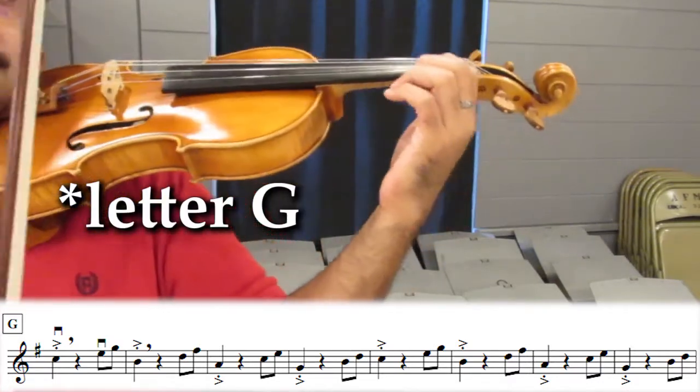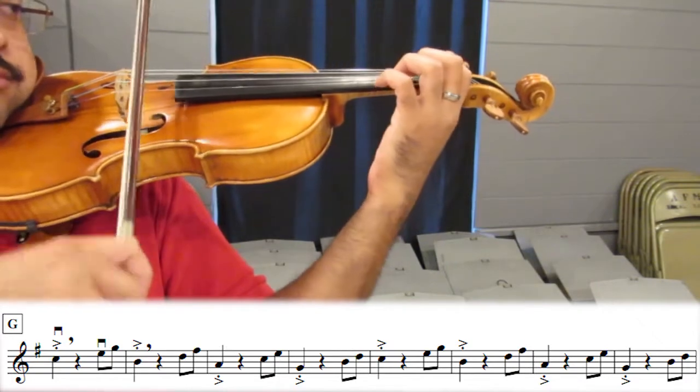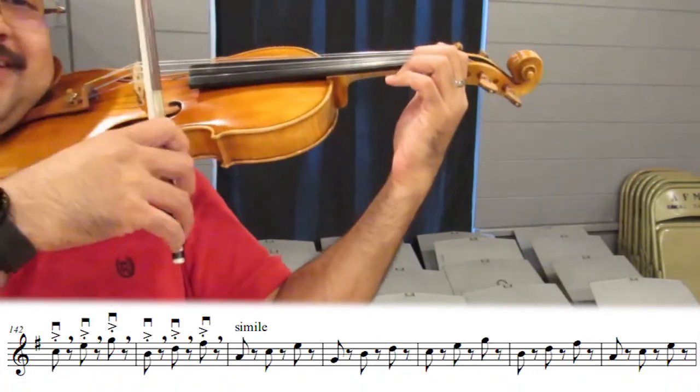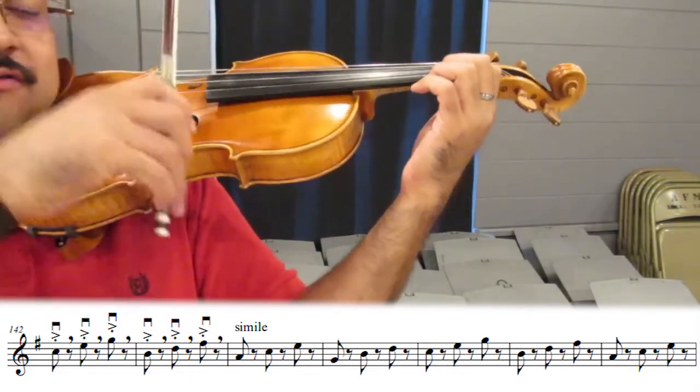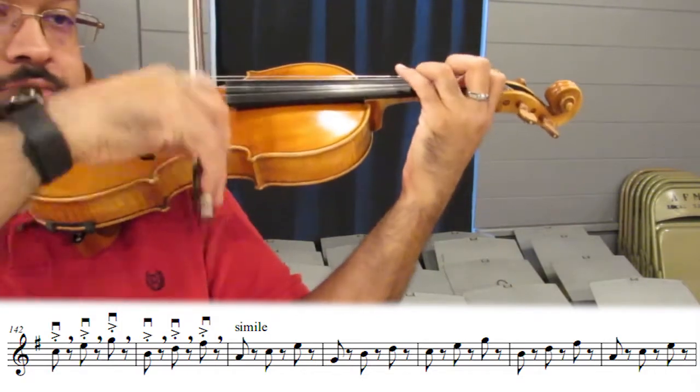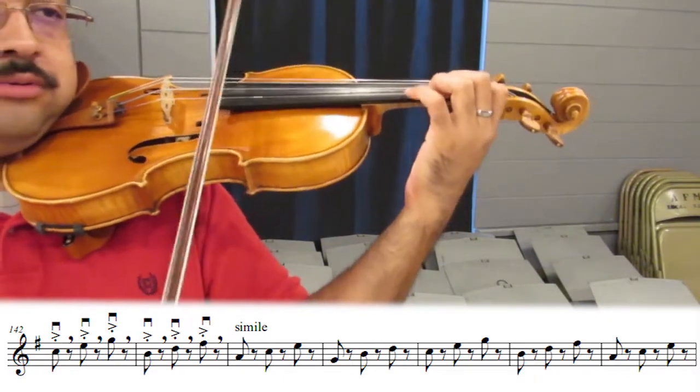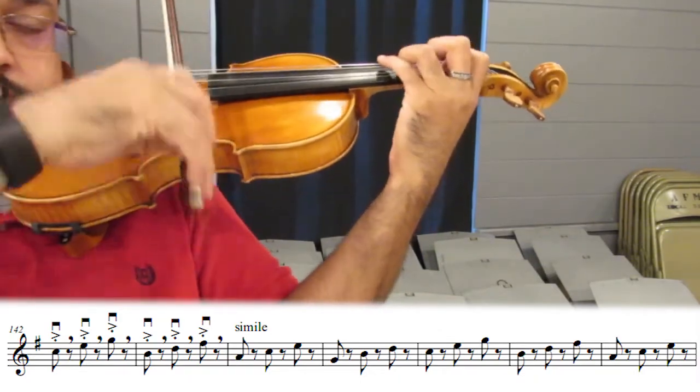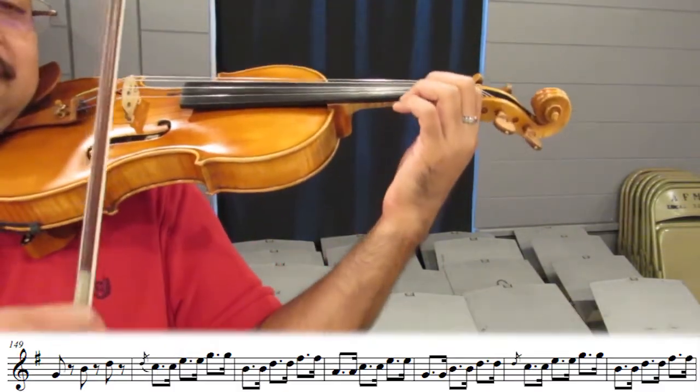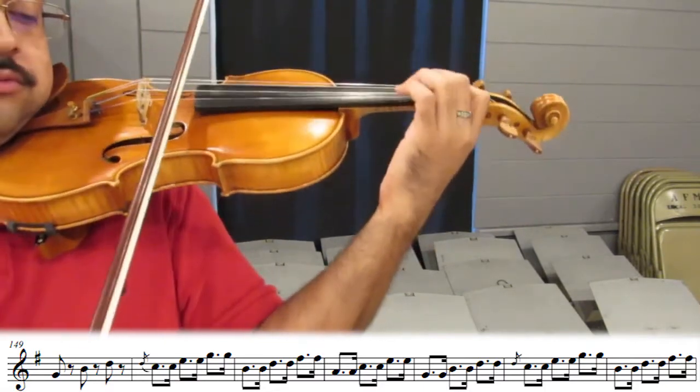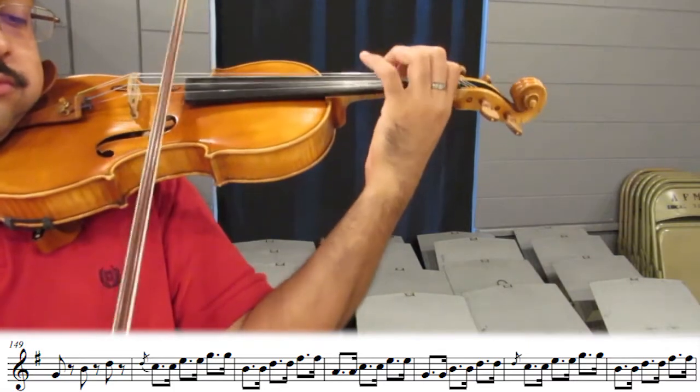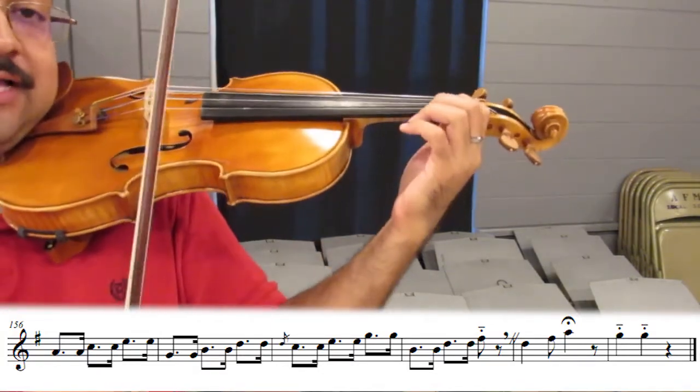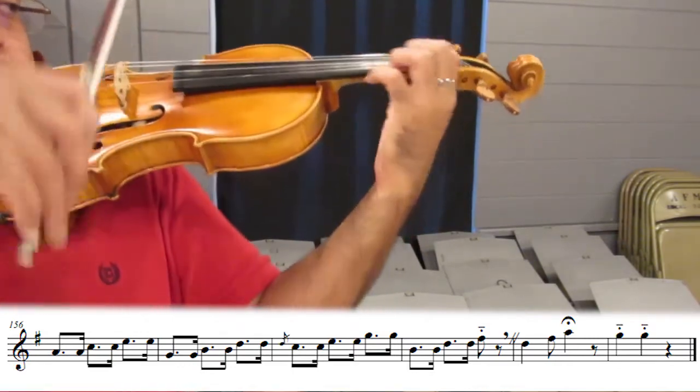Here we go, letter F, one two three. Make sure at 142 make sure you stay close to the lower half for all of those retraces. You can't really retrace at the tip or middle, now you're gonna take away from the sound, so be closer to the lower half. Measure 150, we found that perfect rhythm, right, not too straight, not too caballito. Give that last note a little vibrato, let it ring.